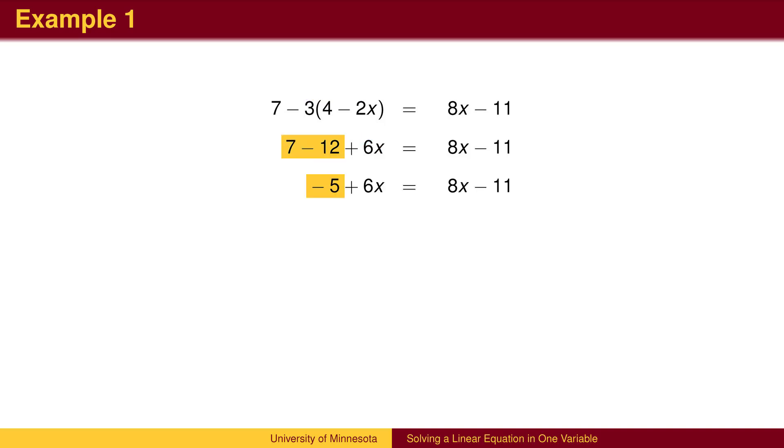Next, on each side of the equation, combine like terms. In general, you may need to combine like terms in several places, but in this case, we only need to add the 7 and negative 12.